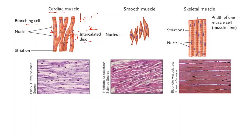Cardiac muscle has one to three nuclei. Nuclei are important because that is where we have our DNA, and the DNA is the instructions for protein synthesis. Cardiac muscle is controlled by the autonomic nervous system, so it is involuntary — we can't consciously control our heart rate or the force of contraction. The cardiac muscle also has a striated appearance, meaning it looks striped with a banding pattern, similar to our skeletal muscle.